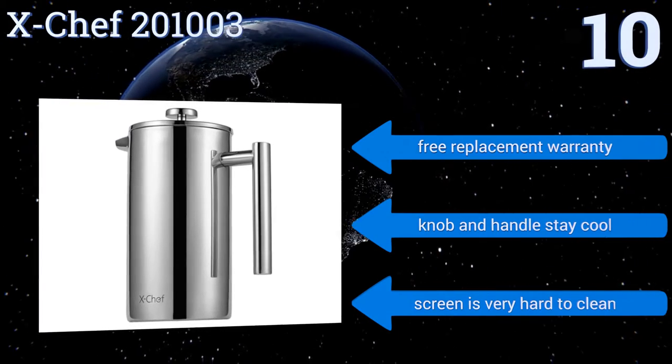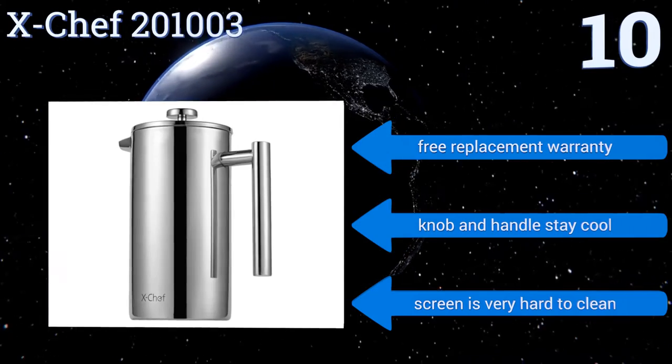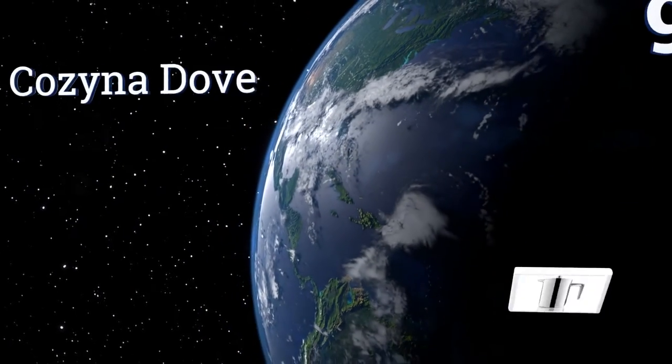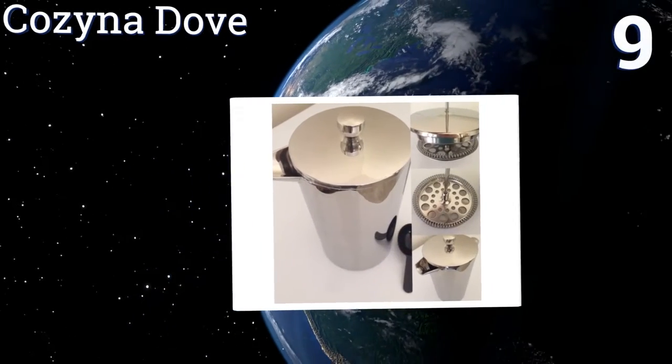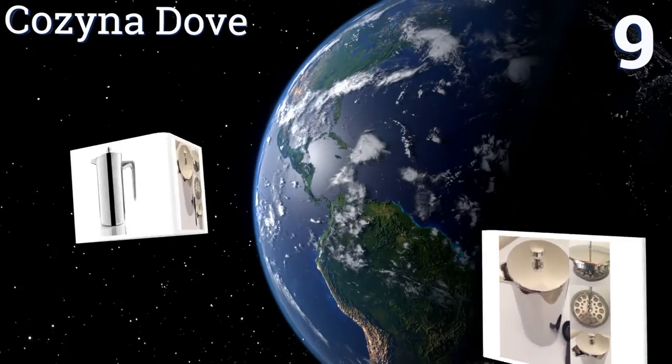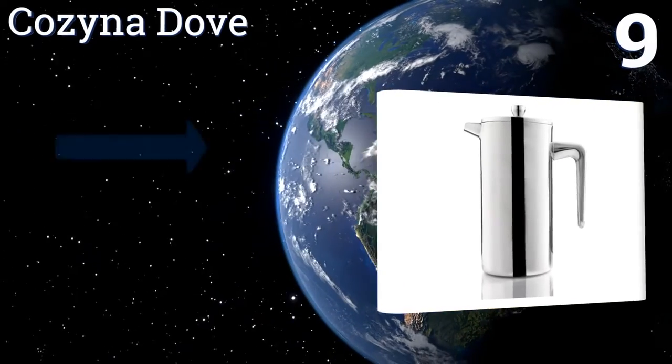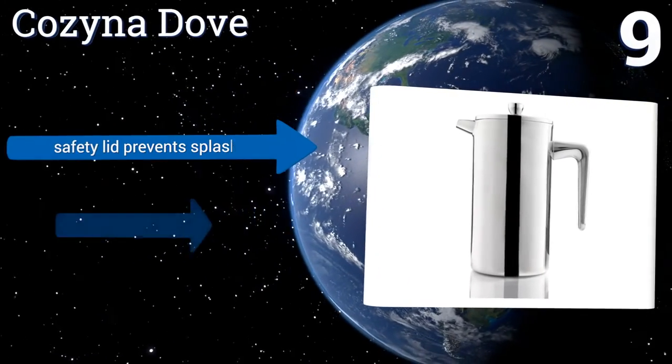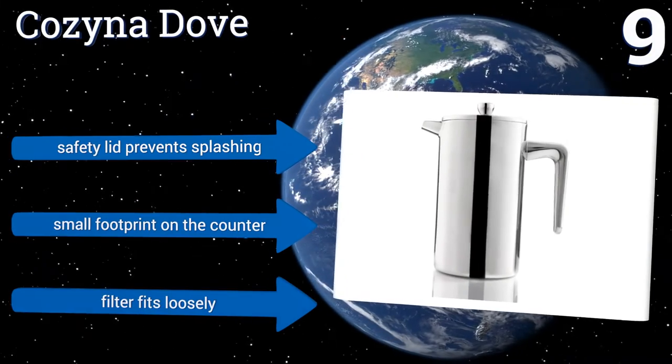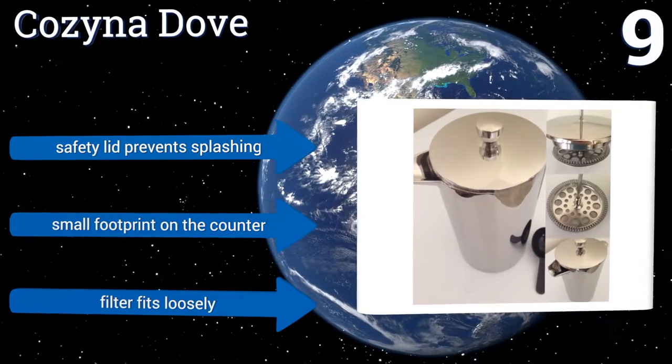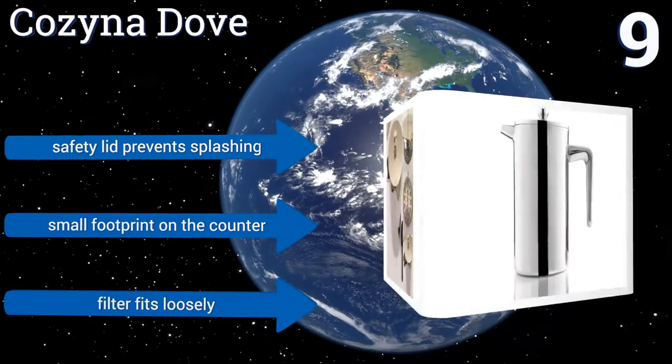At number nine, create that perfect cup of morning joe with the Cozina Dove, and then just toss the whole thing in the dishwasher when you're done for easy cleanup. It's designed to serve three to four people with its 34-ounce carafe, and its highly polished exterior is sure to impress. Its safety lid prevents splashing and it takes up a small footprint on the counter, but the filter fits a bit too loosely.